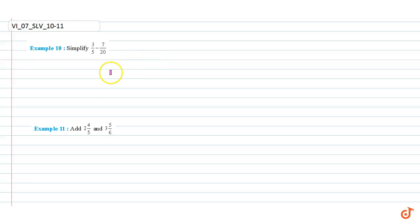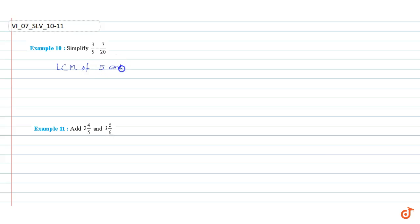In this video we are going to solve Example 10. Simplify 3/5 minus 7/20. The LCM of 5 and 20 is 20. Therefore 3/5 minus 7/20 equals 3 into 4 divided by 5 into 4, minus 7/20.